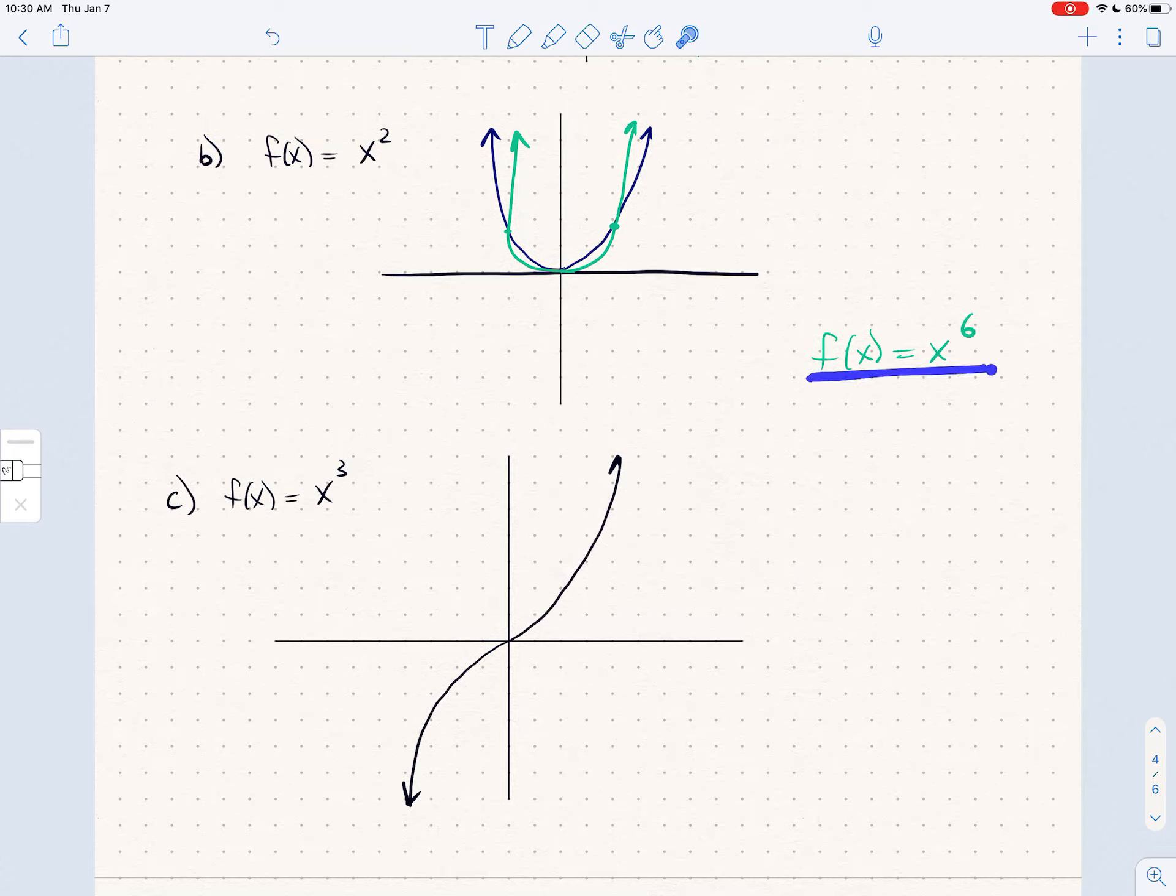It's not a perfect graph but that's more or less the graph of x to the 6. And so the point is I recognize that any positive even power of x is going to look like x squared. And similarly any positive odd power of x is going to look like x cubed. And let's go ahead and graph f of x equals x.